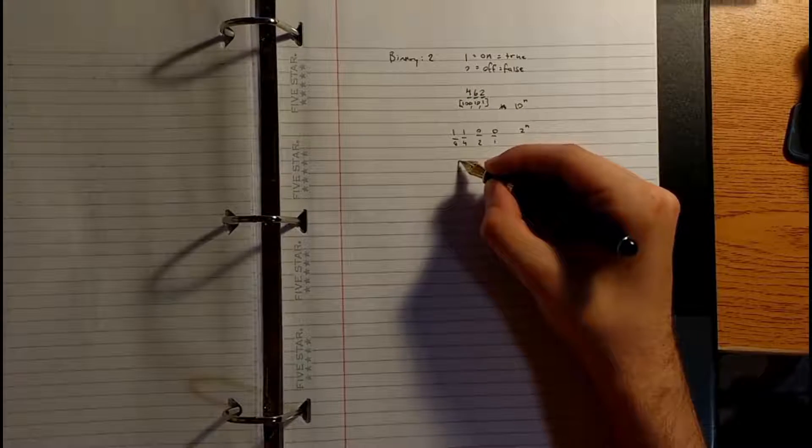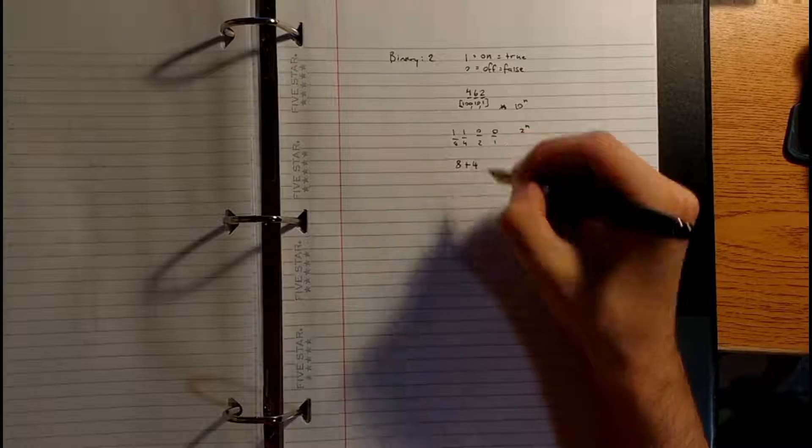We go with 8 times 1 is 8, 1 times 4 is 4, 2 times 0 is 0, and 1 times 0 is 0, which gives us the number 12. That simple.